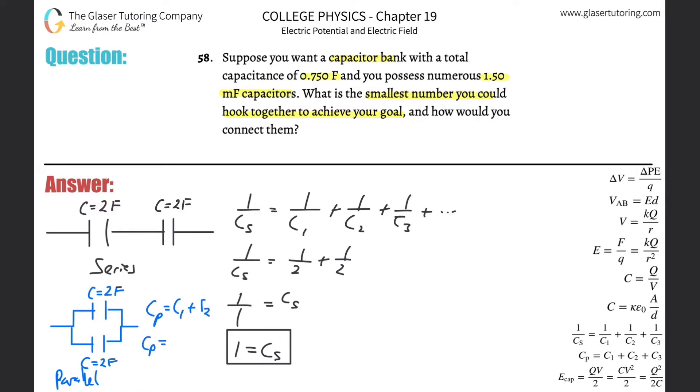If you notice here, just based on the math, this would be 2 plus 2, and that would be 4. So notice when they're in parallel, they essentially add together. The total here will be larger than what you started with.